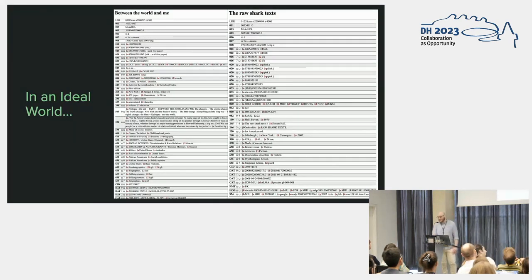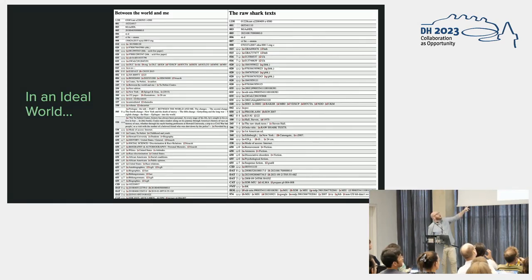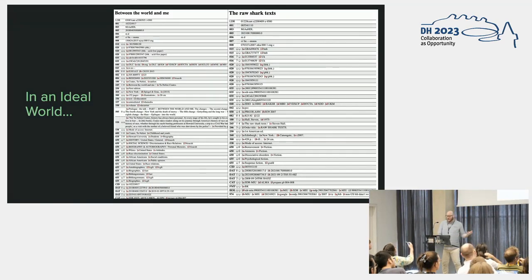In an ideal world, this is what our metadata records might look like — this is MARC viewed in the web browser. You'll notice that we have a lot of subject information for our volumes, lots of other rich metadata. If this were the way things worked, this is how every volume would look.